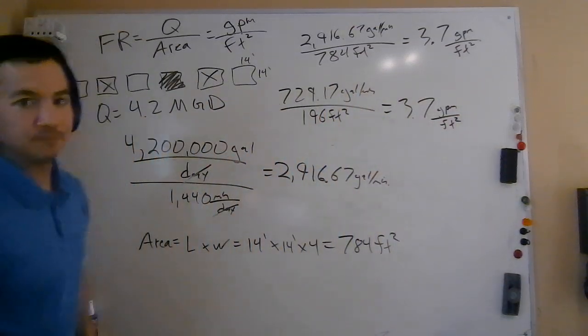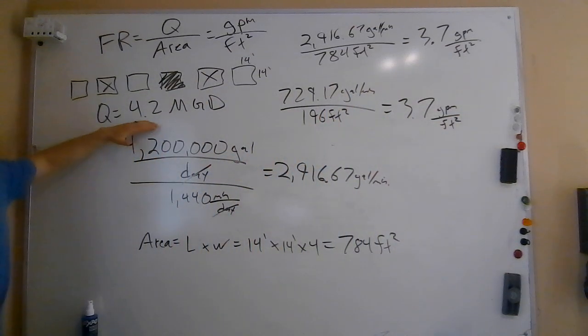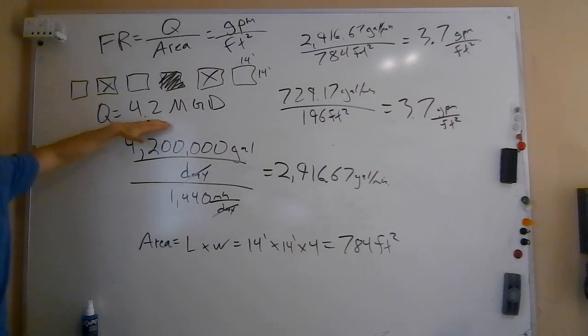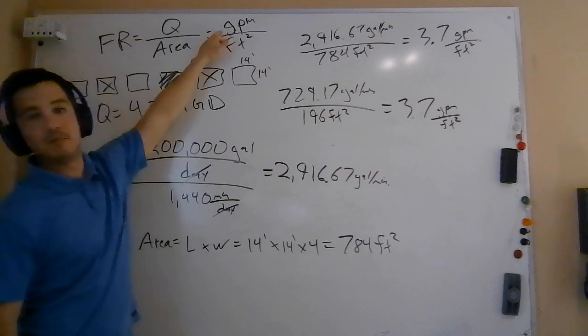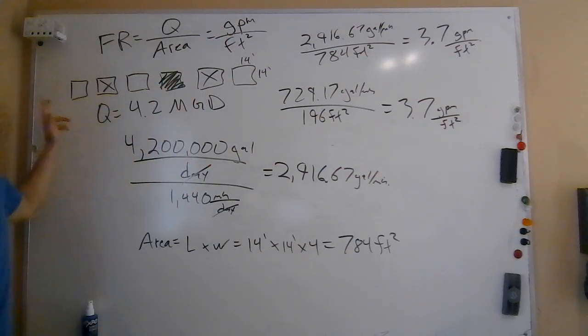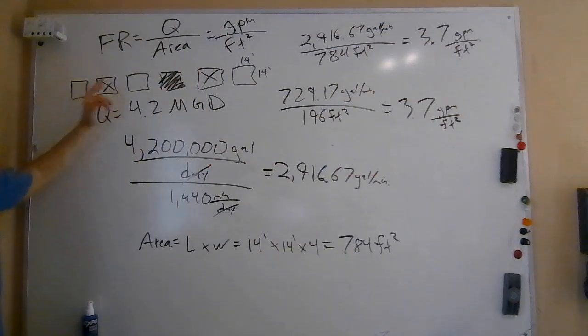So just make sure in this problem, you've got to get your units of flow in GPM, whatever you're starting with. You could have started with CFS, GPM, anything like that, MGD. Make sure we get it to GPM if it's not already in there. In this particular problem, we're looking at four filters. So make sure we account for those four filters somewhere.